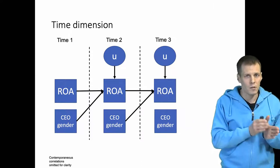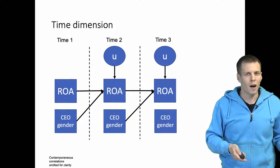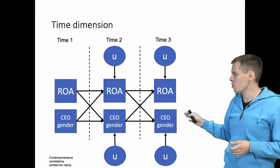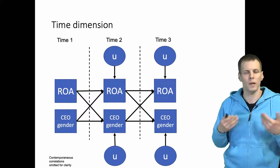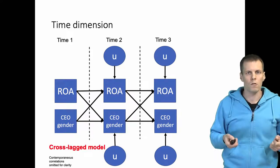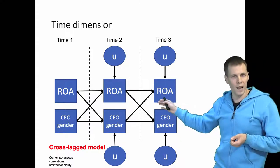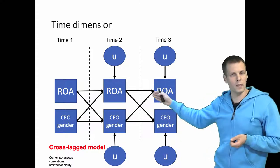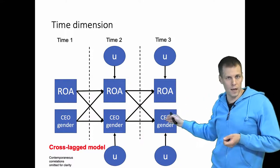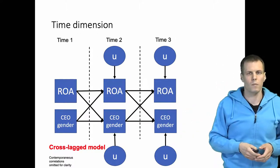We can check whether it's the CEO gender that causes ROA, or whether it's actually ROA that causes CEO gender. This is a very common model used for panel data, typically estimated using structural equation modeling techniques — it's called the cross-lag panel model. It is 'lag' because we have lagged dependent variables explaining future values, and it's 'crossed' because ROA affects gender and gender affects ROA — so these lines cross in the diagram.